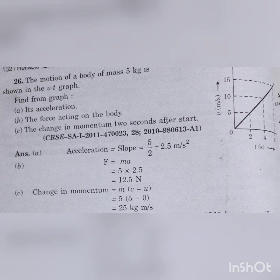Force = mass × acceleration = 5 kg × 2.5 m/s² = 12.5 N. For change in momentum = M × (V − U): mass is 5 kg, initial velocity is 0, and since the question asks for change in momentum after 2 seconds of start, final velocity = 5 m/s. So change in momentum = 5 × (5 − 0) = 25 kg·m/s. If it asked after 6 seconds, you would take 15 m/s.